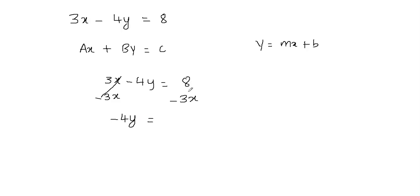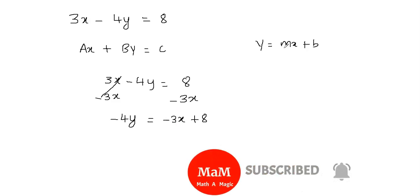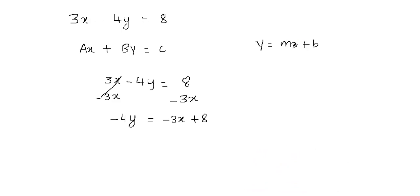It equals 8 minus 3x. We cannot subtract 3x from 8 because they are unlike terms, so we cannot combine them. I'm going to write this as negative 3x plus 8, putting the x term first because in the slope-intercept form you have the x term first and then the constant term. The 8 is positive since it doesn't have any sign in front of it.